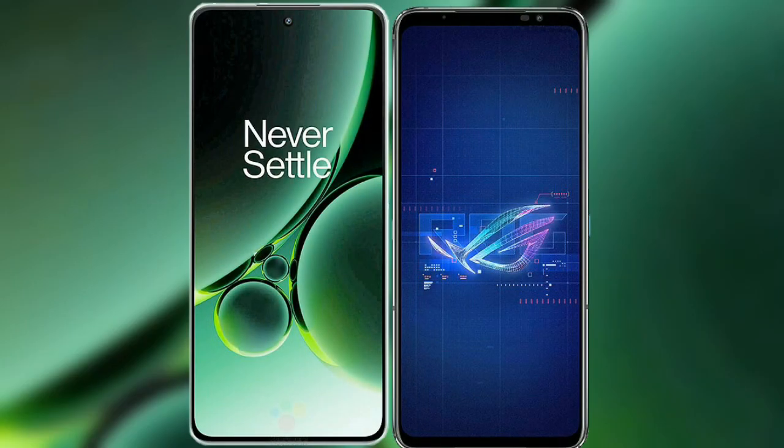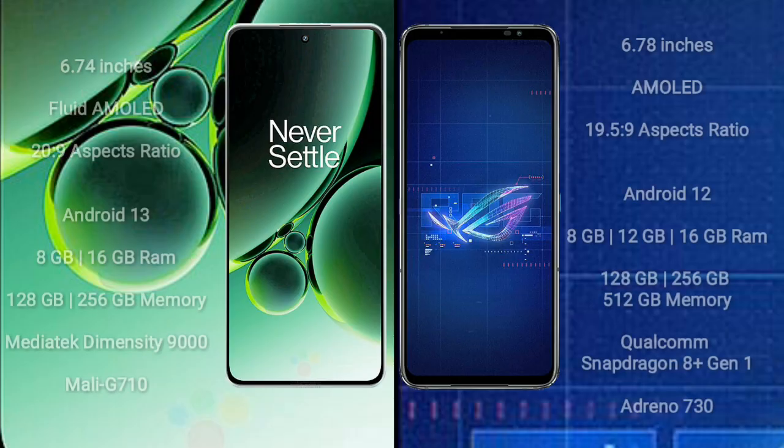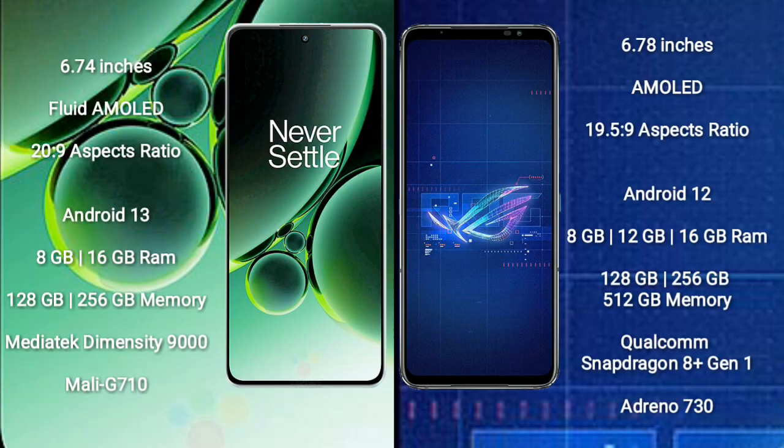I will compare the new OnePlus Nord 3 with the Asus ROG Phone 6. OnePlus Nord 3 comes with a 6.74-inch flat AMOLED display and 20:9 aspect ratio. Asus ROG Phone 6 comes with a 6.78-inch AMOLED display and 19.5:9 aspect ratio.